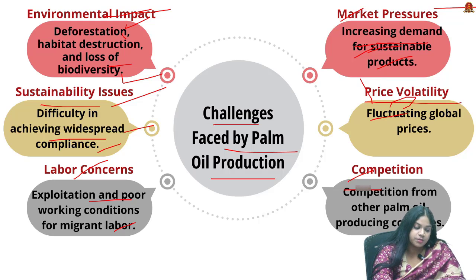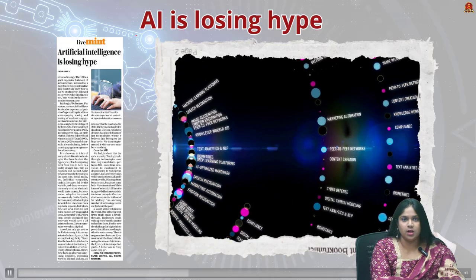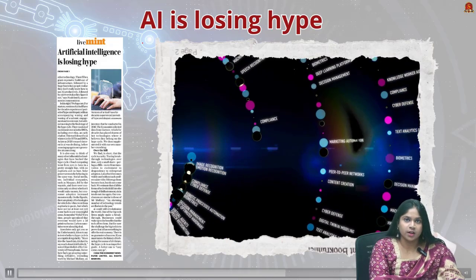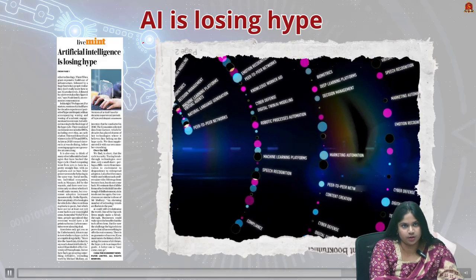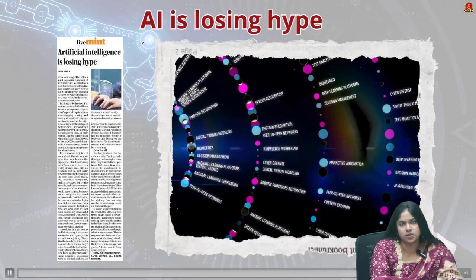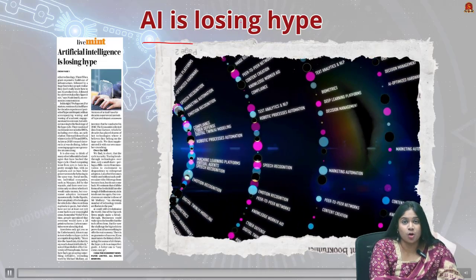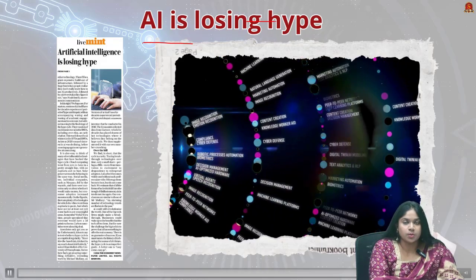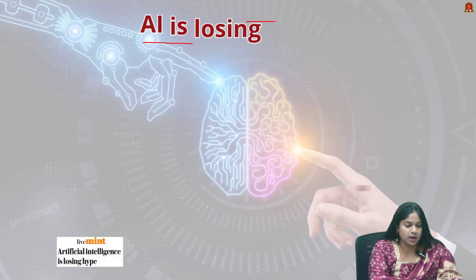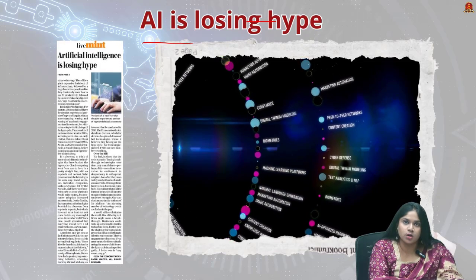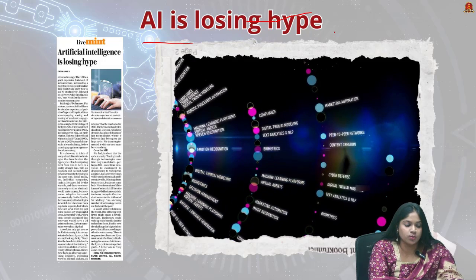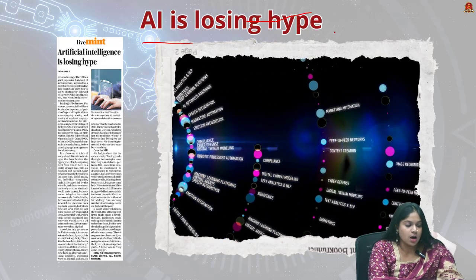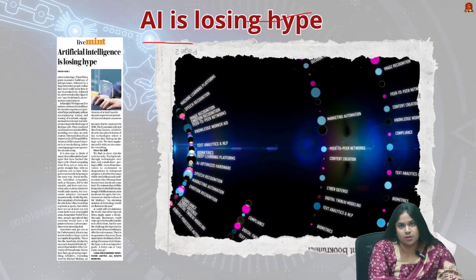The next article is about AI losing hype — investors are getting worried that artificial intelligence might not bring the huge profits they expected. Stock prices of major AI companies have dropped by 15%. Some experts are questioning the limitations of AI, especially large language models like ChatGPT. Despite big investments in AI, only 4.8% of American companies are currently using it, a decrease from earlier this year.